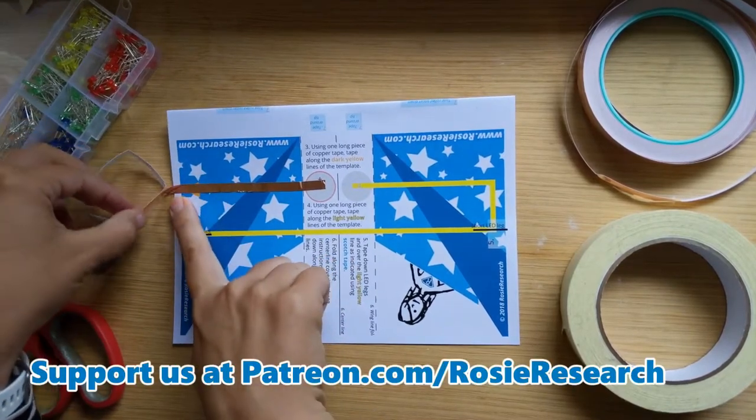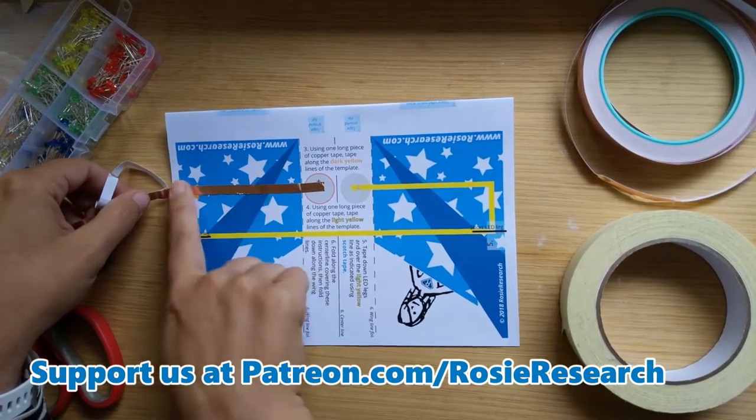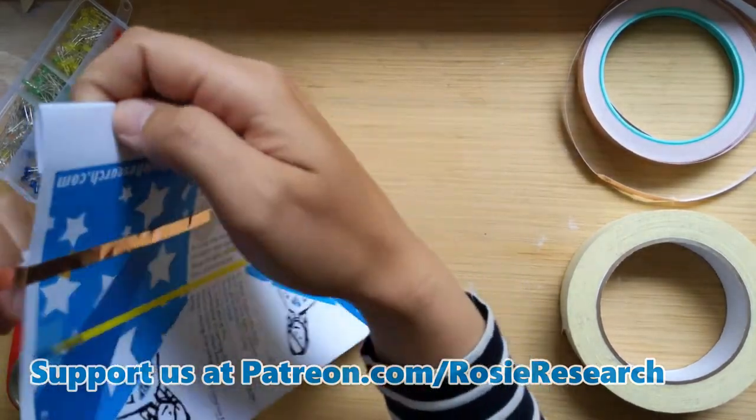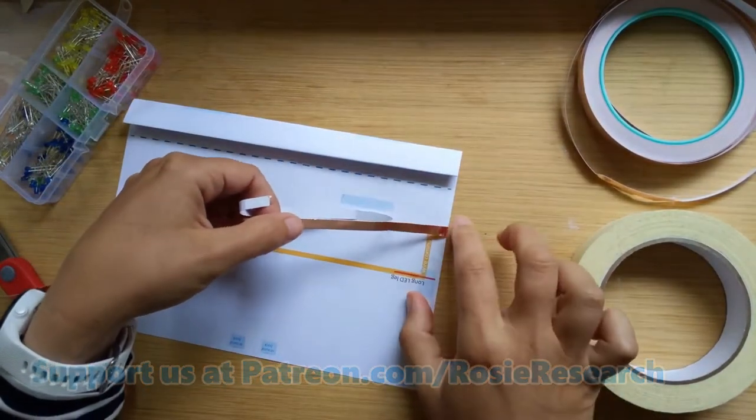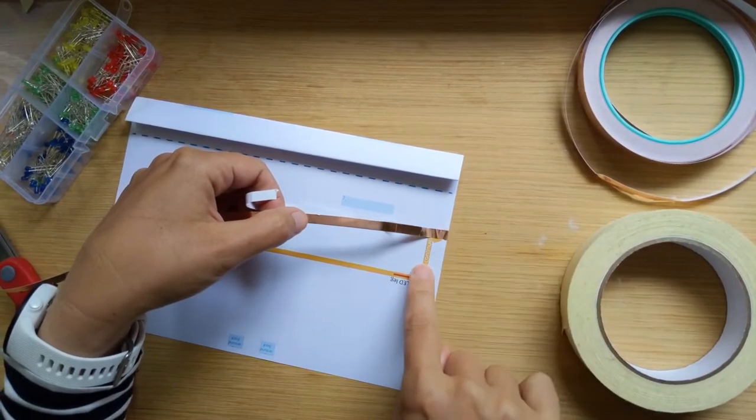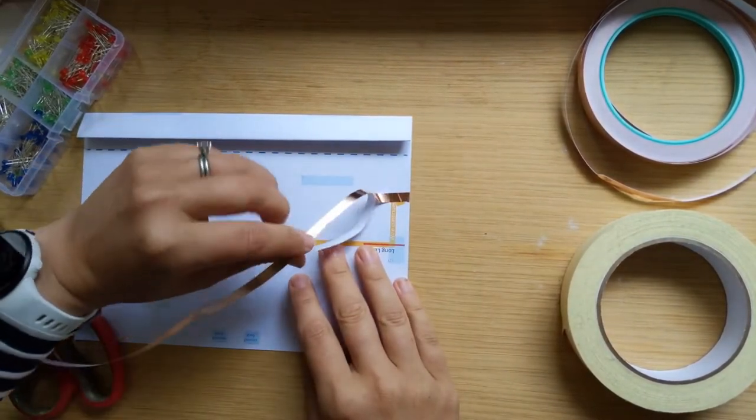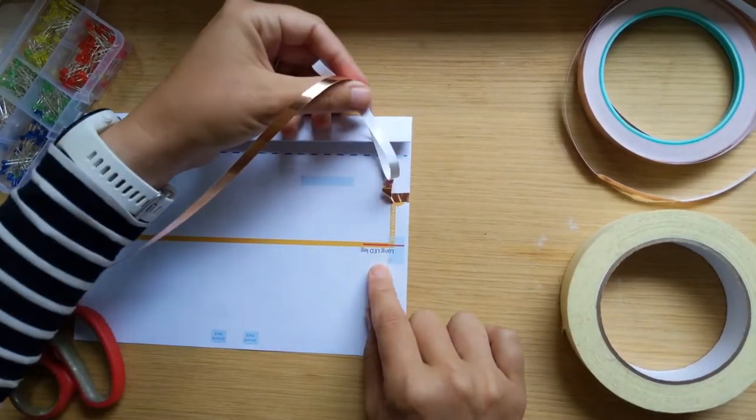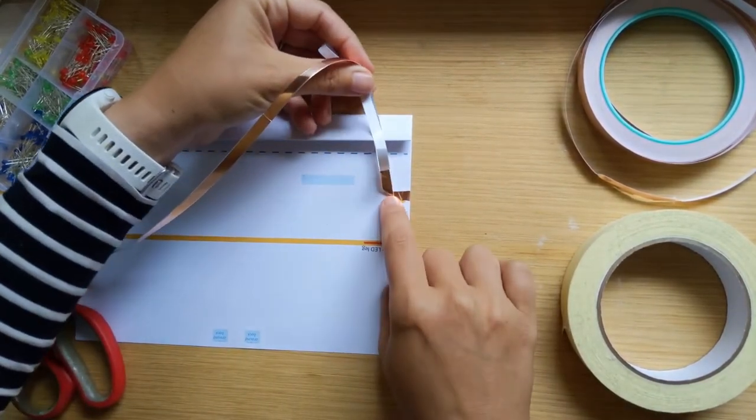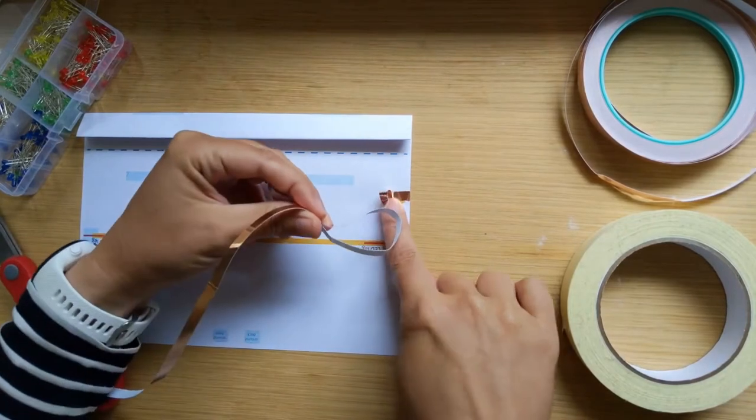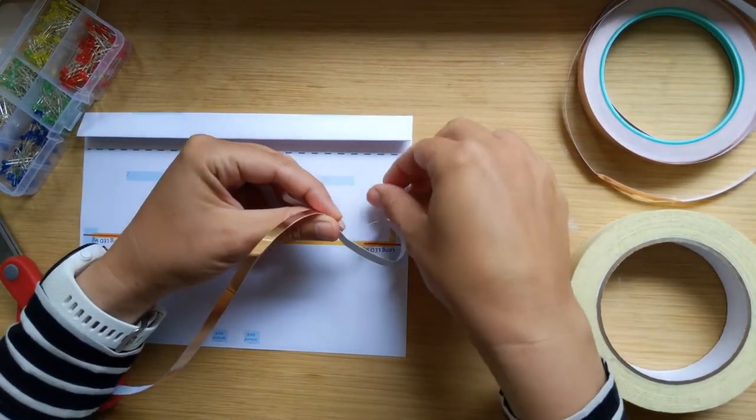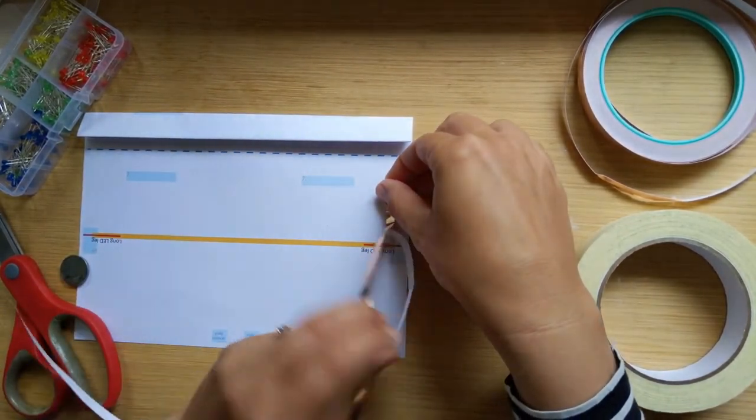So get yourself a nice long piece of copper tape, just in case something happens. You're going to get it started with your fingernail. And with all of our paper circuits, once we start it, we don't peel it all the way off. We start sticking it straight to the paper. And we go inside of this circle. Really important to be inside, but not outside the circle. So you're going to go inside the circle and I'm going to start following this yellow line.